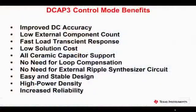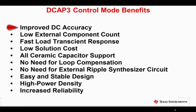DCAP3 Control Mode provides a significant benefit over the previous DCAP2 Control Mode in that it provides much tighter DC accuracy on top of the well-documented DCAP2 Control Mode benefits, which are very low component count, very fast load transient response, no loop compensation, no need for an external RC synthesizer ripple circuit, and very high power density and reliability.